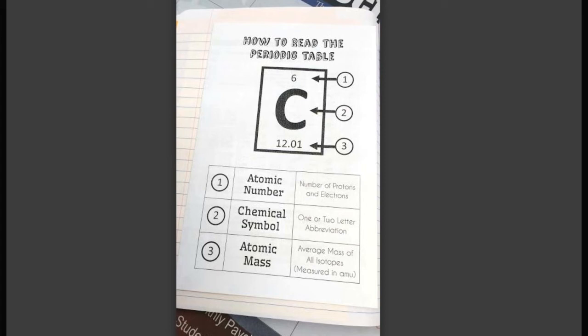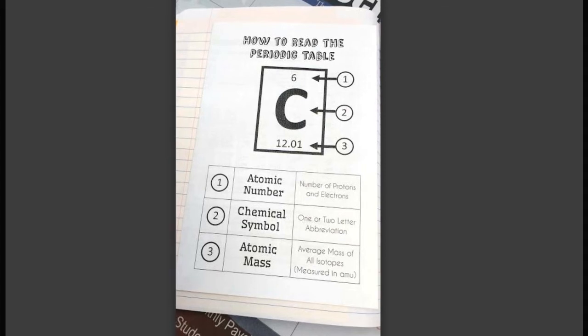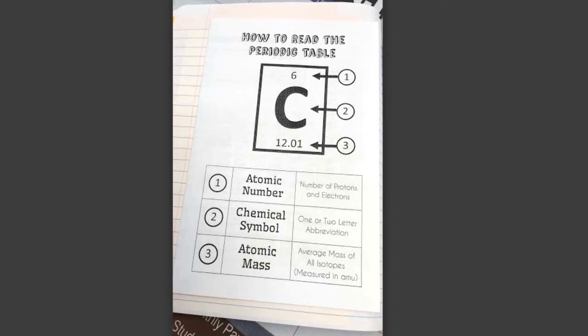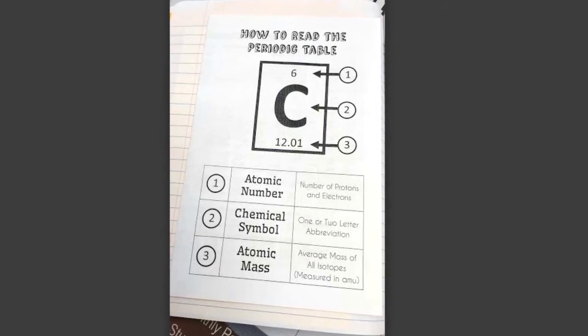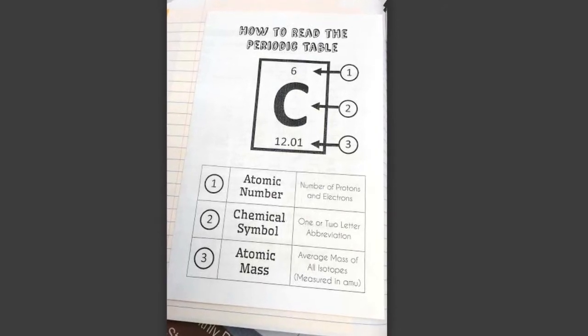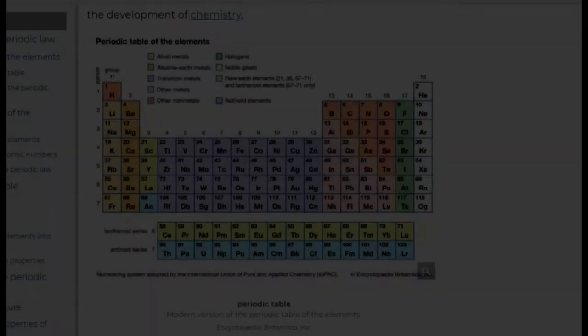How to read the periodic table. You will need a copy of the periodic table to follow along. You can also find a copy in the back of your school's agenda or on Google to search for periodic table.